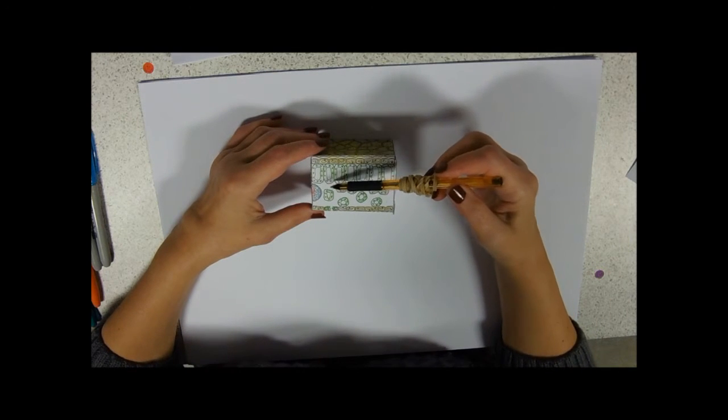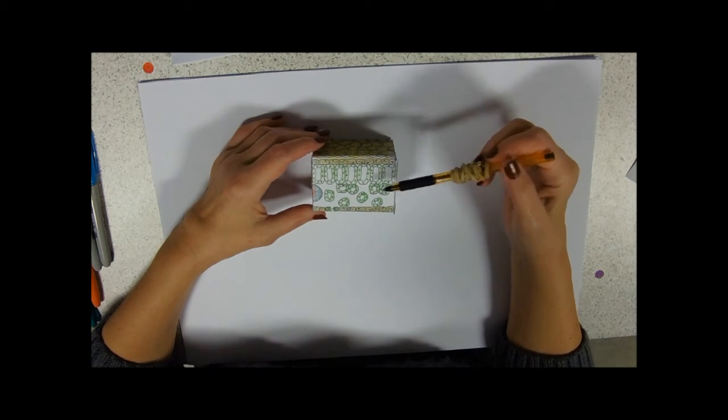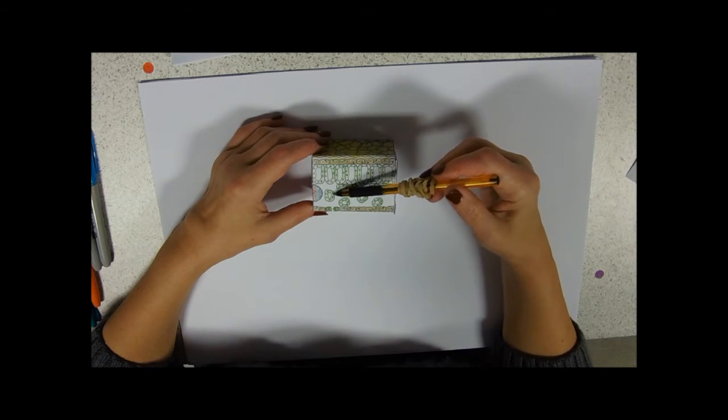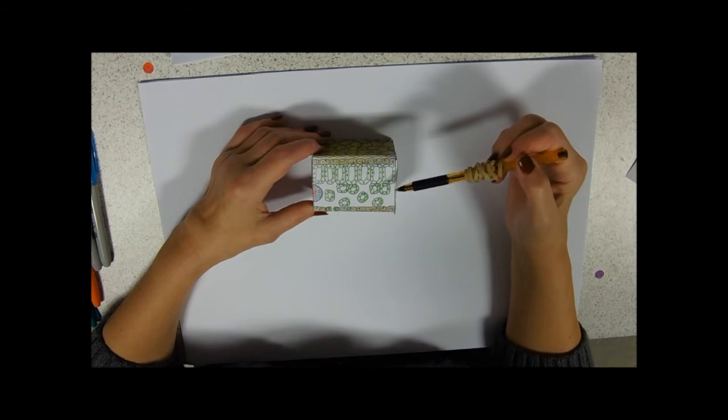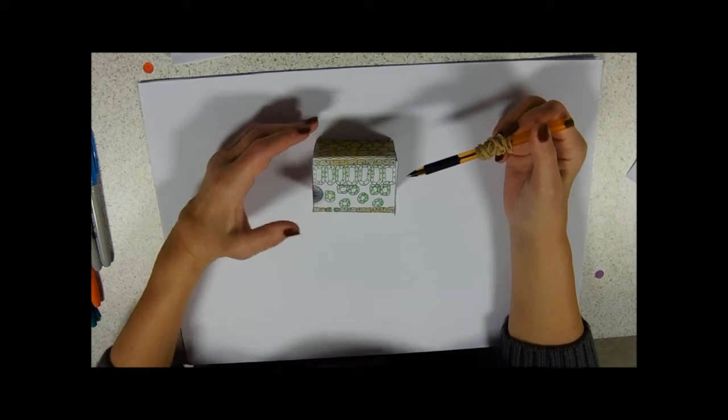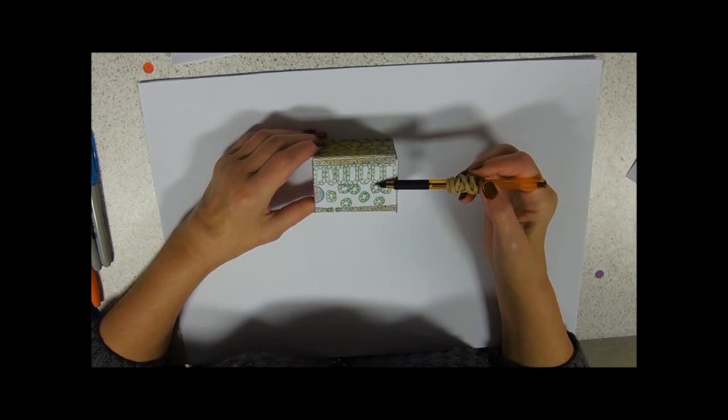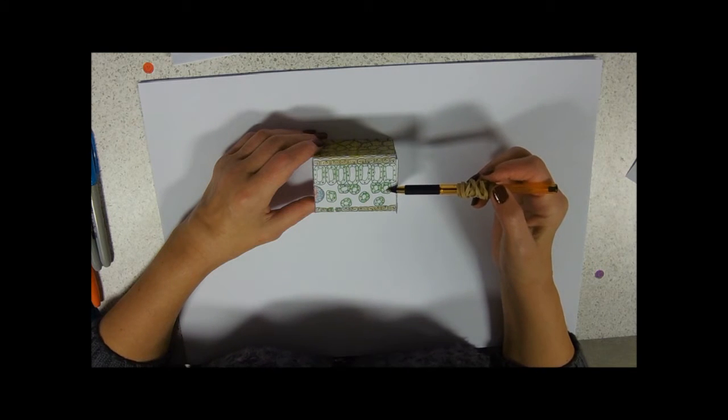We then move down through the leaf and we've got the spongy mesophyll layer. Spongy, so called, because it's got these huge air spaces in them. Now these cells, the spongy mesophyll cells themselves, this person's colored them green to show that they photosynthesize as well. So light that passes through the palisade mesophyll cells can be harvested by the spongy mesophyll cells.